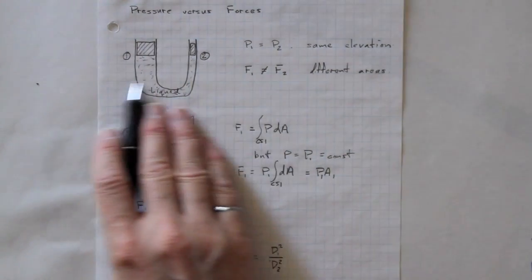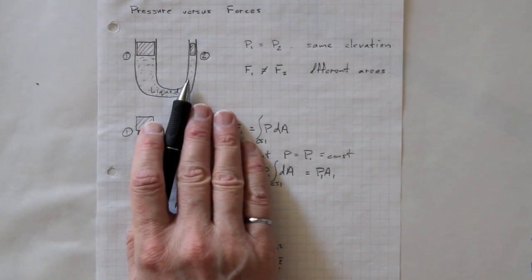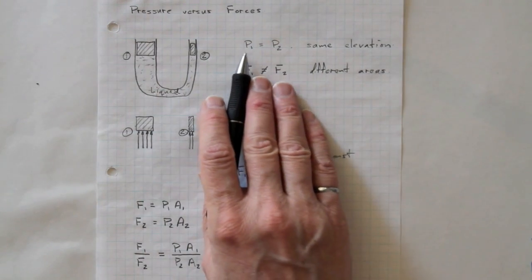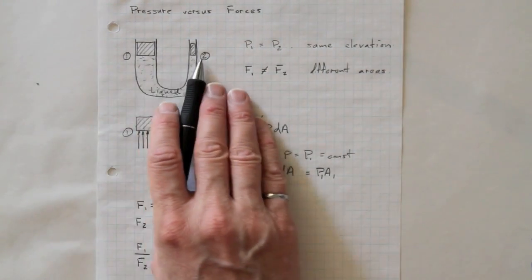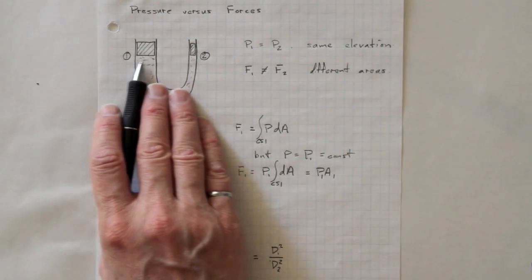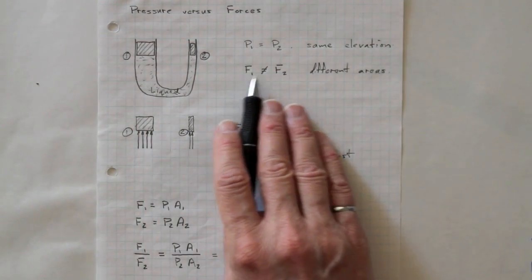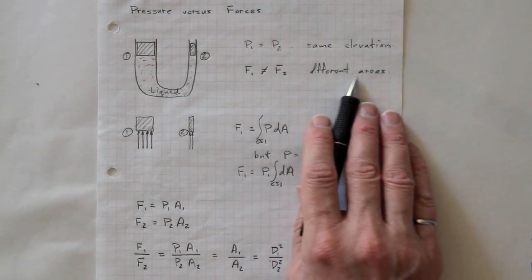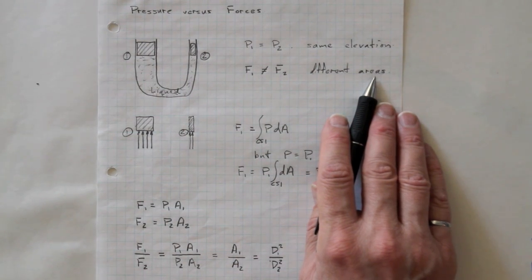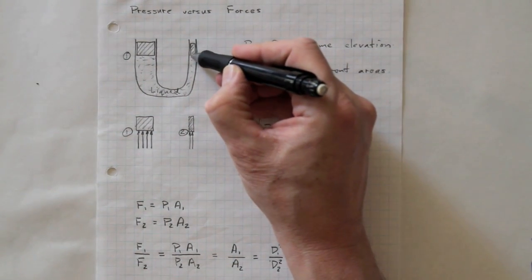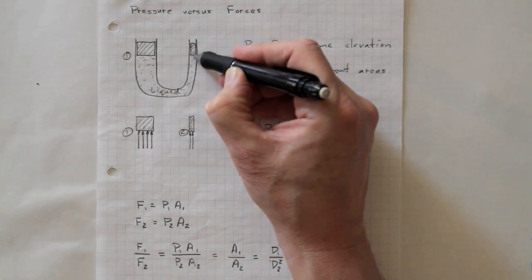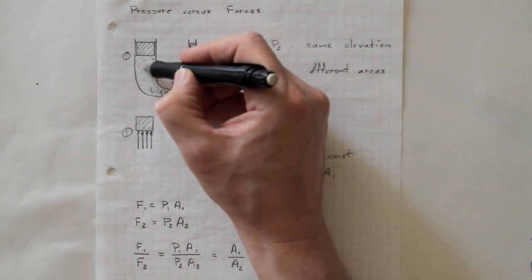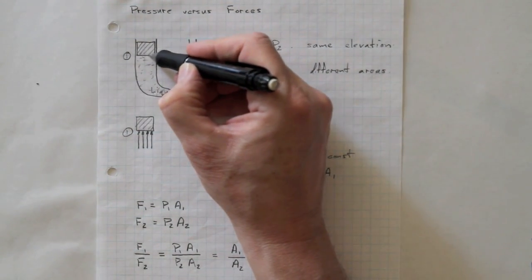This schematic illustrates what's going on in a hydraulic jack. P1 is equal to P2, they're at the same elevation. So there's no pressure difference between 1 and 2. But F1 is not equal to F2 because they've got different areas. The small area at 2 here is subject to a much smaller total force from the pressure than the larger area at 1 here.